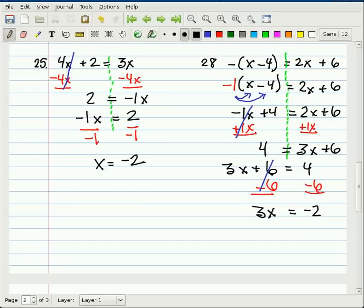The inverse operation for 3 times x is to divide by 3. And when you do that, you know those 3s cancel. And we are left with x equals negative 2 over 3, we're just going to leave it as negative 2 thirds.